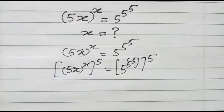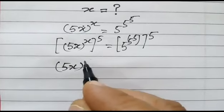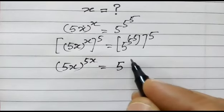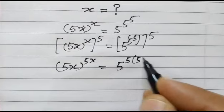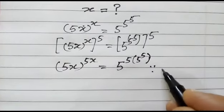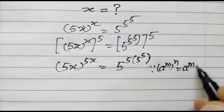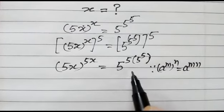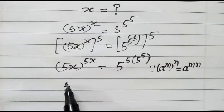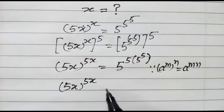Now, 5x to the power x, to the power 5, is equal to 5 to the power 5 to the power 5. This gives us (5x)^(5x) = 5^(5^5), because a to the power m to the power n is equal to a to the power mn.